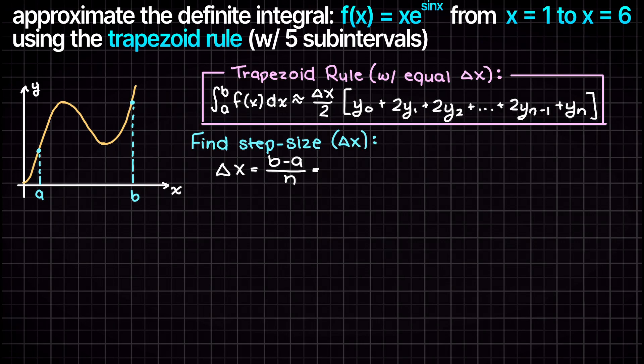This is our upper bound 6, minus our lower bound of 1, over 5, which gives us a step size of 1. Let's add these divisions to our graph now.